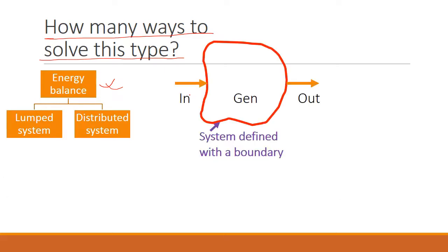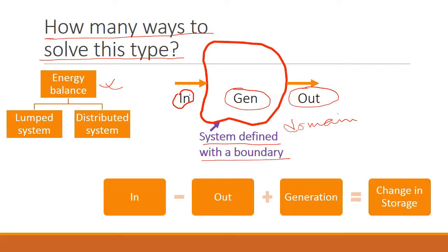So in energy balance, we define a system that has a boundary. It's also referred to as domain over which we are going to do this energy coming in, energy going out, energy being generated. And from that, we're going to do a balance like this. So in minus out plus generation equal to change of storage because energy is not being destroyed.